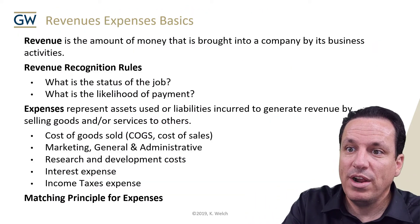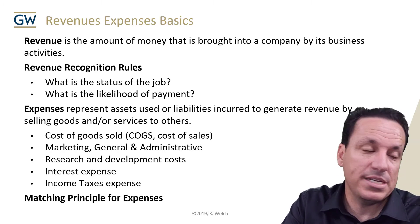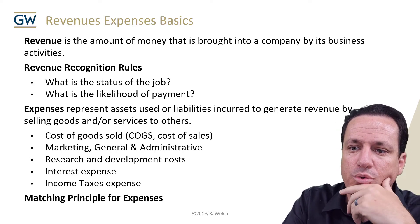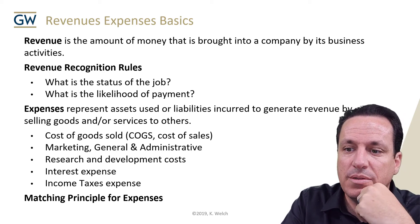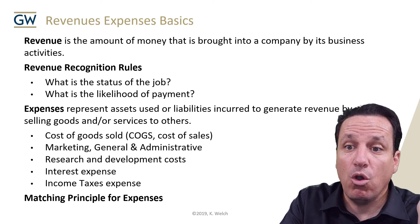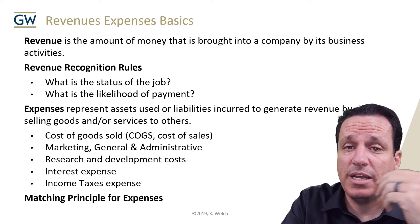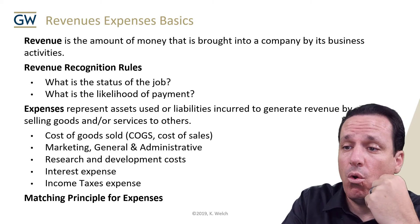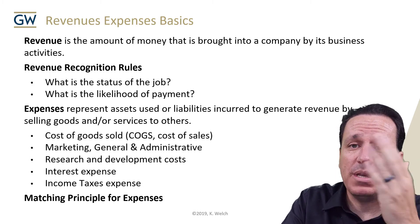Revenue and basic expenses: remember revenue recognition rules — what's the status of the job, and what's the likelihood of payment? Expenses are generally things associated with the normal operations of the business: marketing, general administrative expense, research and development costs, interest expense. Things you wouldn't count as expenses are equipment destroyed in a fire or sold at a loss — those would be a loss or a gain.